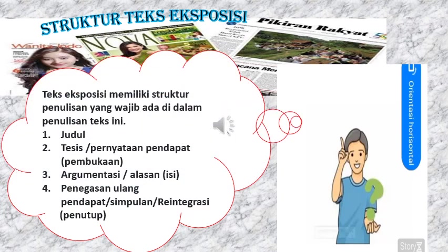Anak-anakku, setelah kalian tadi memahami teks eksposisi yang terdiri dari gagasan dan fakta, sekarang kita akan mengupas yang kedua, yaitu tentang struktur teks eksposisi. Di dalam teks eksposisi memiliki struktur penulisan yang wajib ada, yaitu: 1. Judul. 2. Tesis atau pernyataan pendapat — ini termasuk dalam bagian pembukaan. 3. Argumentasi atau alasan — ini merupakan bagian isi. Dan keempat, penegasan ulang pendapat atau simpulan — ini merupakan bagian penutup pada sebuah teks eksposisi.